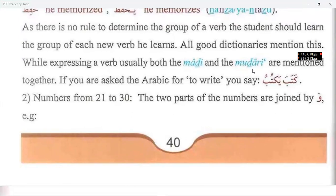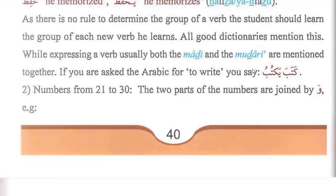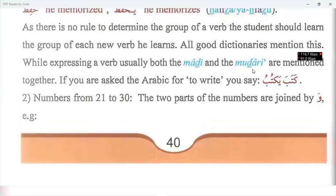Continuing the masculine counting: arba'atu tullabin — four students; khamsattu tullabin — five students; sittatu tullabin — six students; sab'attu tullabin — seven students; samaniyatu tullabin — eight students; tis'atu tullabin — nine students; asharatu tullabin — ten students.